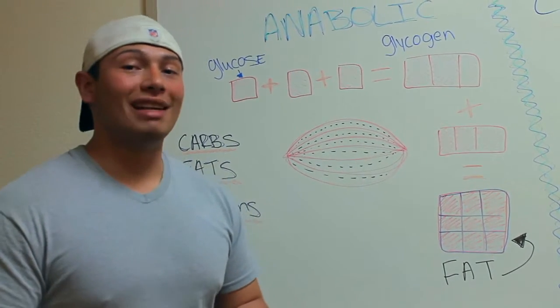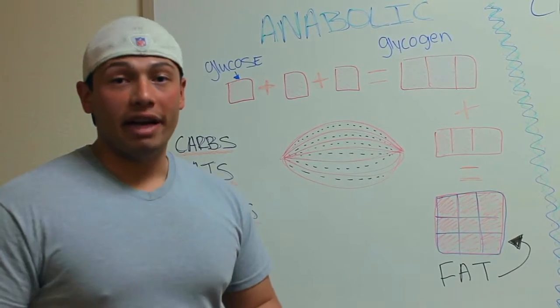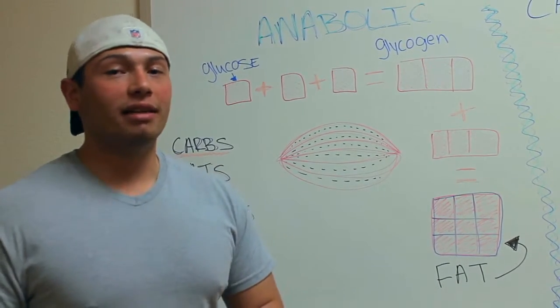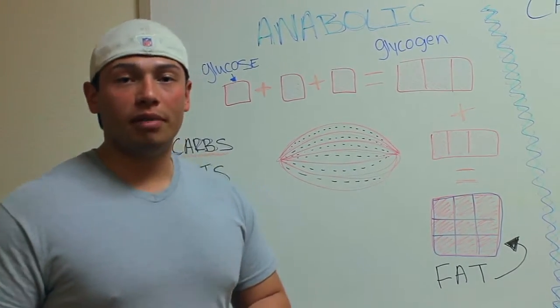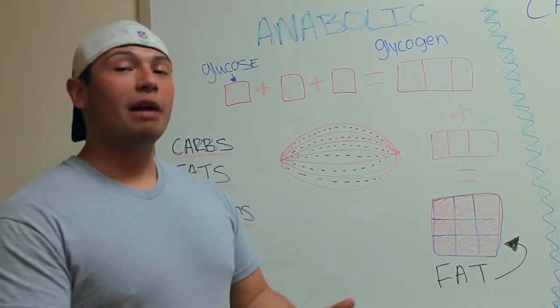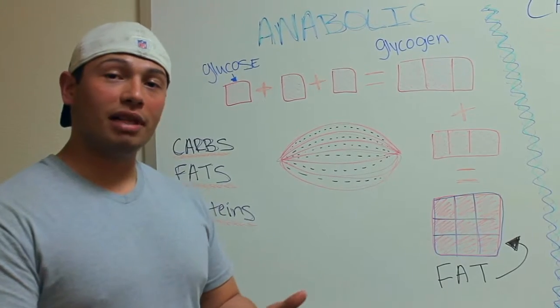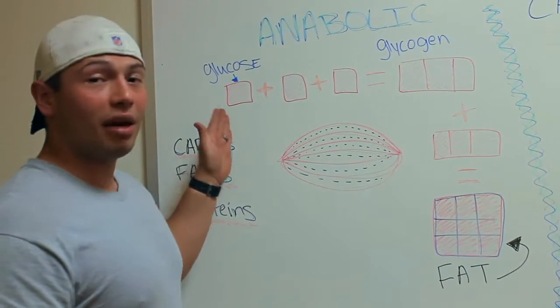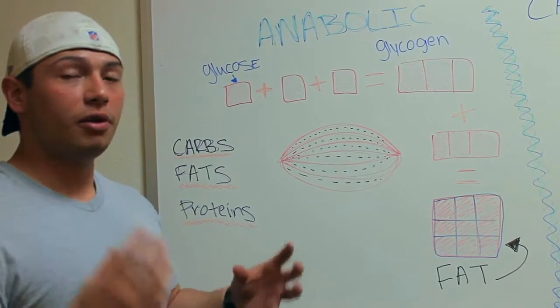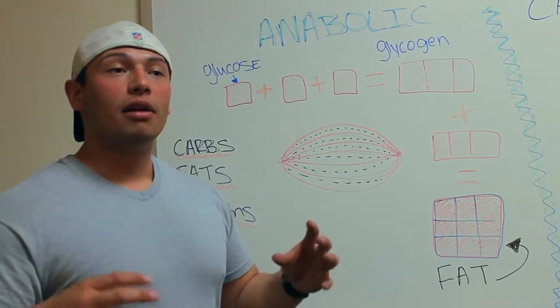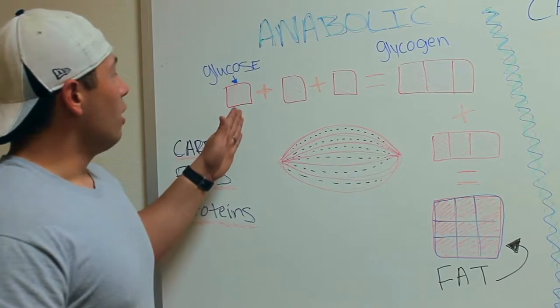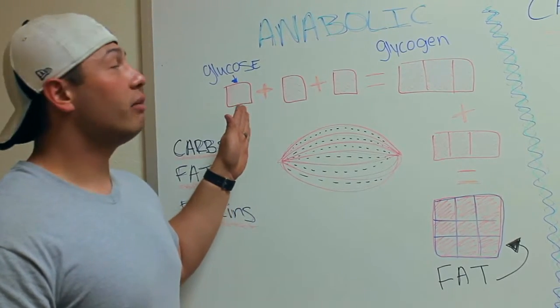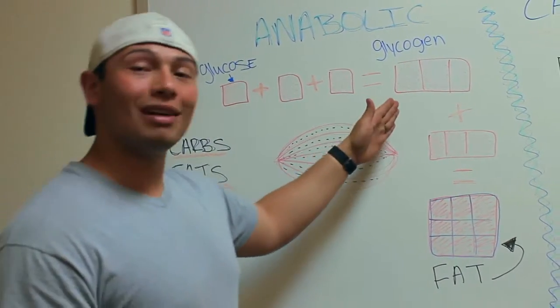Now, when your body is in an anabolic state, there is no energy needed. Your body is at rest, repairing itself from what you just did for the catabolic state. So what happens is when there's too much glucose or enough glucose to group together, in an anabolic state, your body will group glucose together and turn it into glycogen.